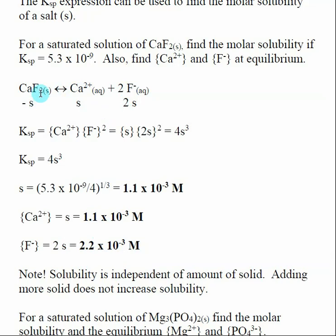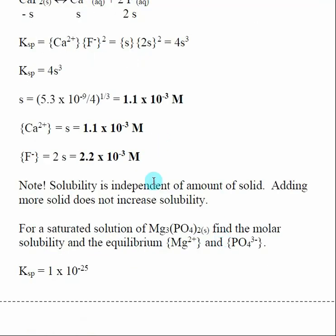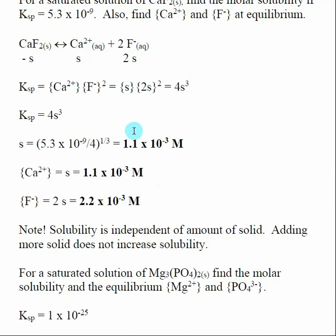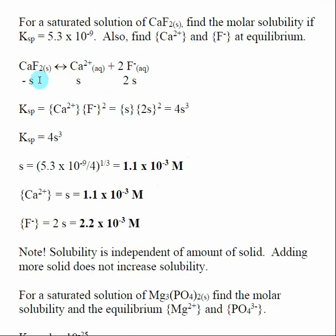There are two fluorides inside calcium fluoride, so it produces a concentration of F⁻ twice as large as Ca²⁺. This solubility is independent of the amount of solid. Once I've reached the saturation point — where no more calcium fluoride can dissolve — I've made the maximum amounts of Ca²⁺ and F⁻. Adding more solid will not increase the concentrations, which is part of why the solid does not appear in the equilibrium expression.